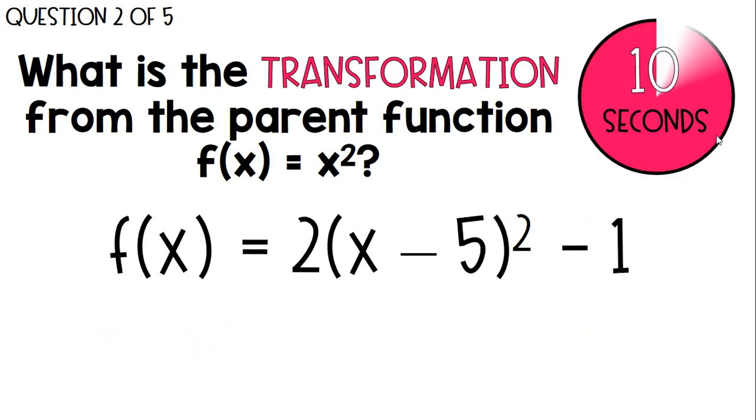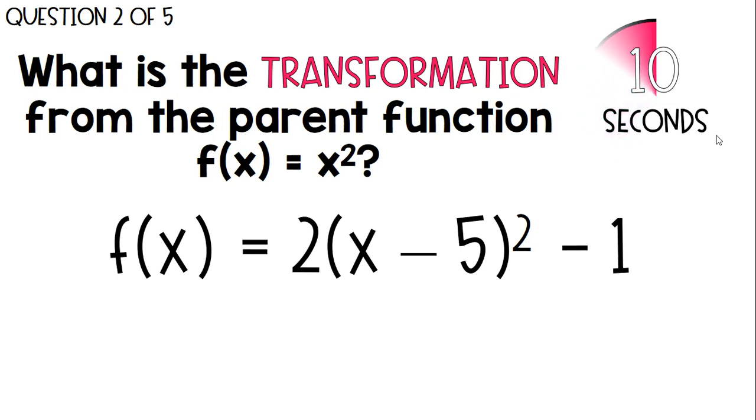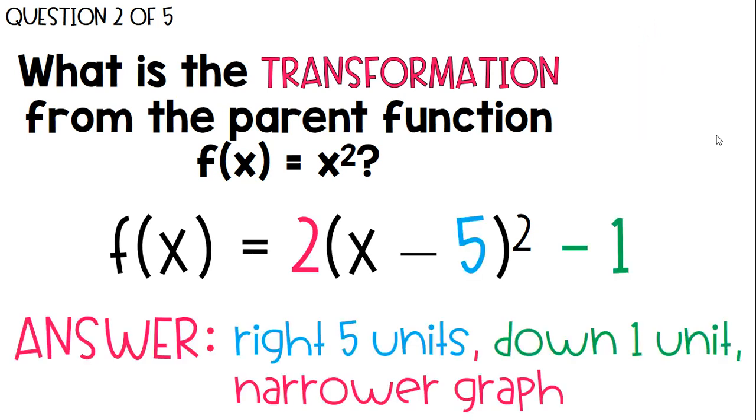Next one. What's the transformation of this function? There's three pieces to this one. The 5 means right 5 units, the negative 1 means down 1 unit, and that a value of 2 means the graph is going to be narrower than the parent function.